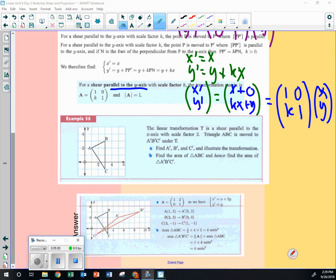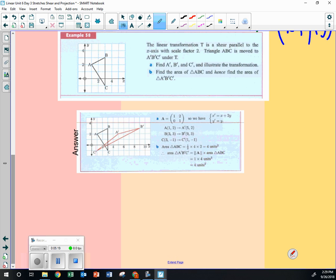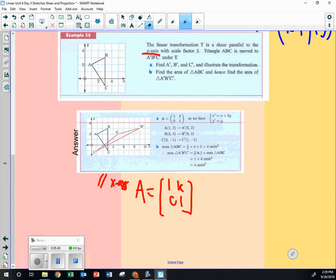A linear transformation t is a shear parallel to the x with scale factor 2. The triangle is moved a prime, b prime, c prime under t. Find these and illustrate the transformation. Find the area graph of those. So, what you're going to do is that the first thing you're going to do is that it's parallel to which one? X axis or y? X axis, right? So, we look at that formula and it's going to be 1, k, 0, 1. And what did they say that the factor was? 2. So, we take that out. Making this a 2. And then, let's see, what do we want to do?